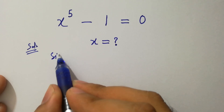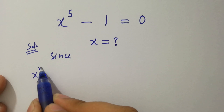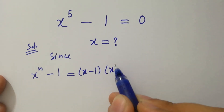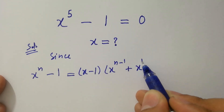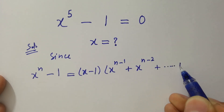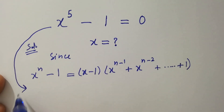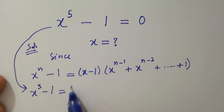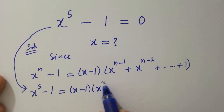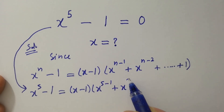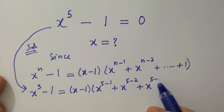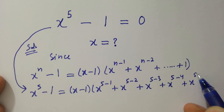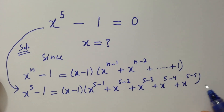Since x to the power n minus 1 equals x minus 1 times x to the power n minus 1 plus x to the power n minus 2 plus up to 1, then x to the power 5 minus 1 equals x minus 1 times x to the power 4 plus x to the power 3 plus x squared plus x plus 1, which equals 0.